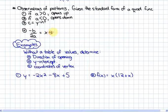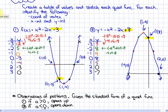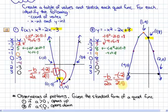For example, looking at the two examples: for function number 1, if we calculate negative b over 2a, the value of b is negative 2 and a is equal to 1. We have negative (negative 2) over 2 times 1, which gives us a value of 1 — equivalent to the x-coordinate of the vertex. For the second example, the value of b is negative 2 and a is negative 1. We have negative (negative 2) over 2 times negative 1, which gives a value of negative 1 — that is the x-coordinate of the vertex.